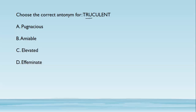Choose the correct antonym for 'truculent.' Truculent is used for a person who is very aggressive and wants to fight repeatedly. The antonym for such a person will be someone who is very friendly, so the antonym is 'amiable.' 'Pugnacious' is a direct synonym for truculent, as it means someone who is very belligerent or likes to fight a lot.